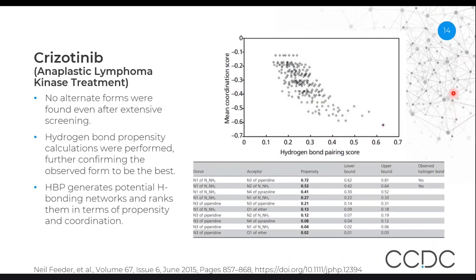Another example from that paper was Crizotinib, a lymphoma kinase treatment. In this case, there were no alternative forms identified through extensive screening, and hydrogen bond propensity calculations were performed. In the case of hydrogen bond propensity, we generate a large number of potential hydrogen bonding networks and then score each of them based on the coordination score and the propensity score for the donors, acceptors, and hydrogen bonds.